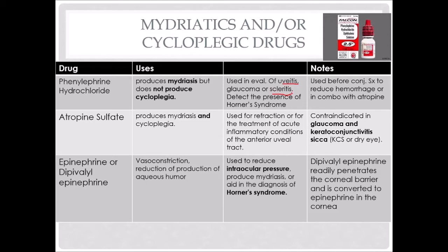Phenylephrine can also be used to detect the presence of Horner's syndrome, which is a paralysis of the facial nerve causing partial paralysis of the face. We will use it before conjunctival surgery to reduce hemorrhage or in combination with atropine. Phenylephrine acts like norepinephrine and epinephrine as a sympathetic agent to constrict blood vessels. Atropine sulfate produces mydriasis and cycloplegia, so it will decrease pain in the eye if we have a really constricted pupil that we think is due to spasms of the ciliary body. We can use atropine to reduce that.